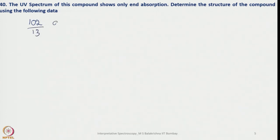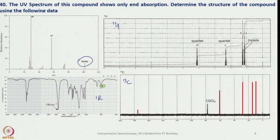So with 102, first we shall divide by 13 — it becomes 7 remainder 11, so that means C7 and H will be 7 plus 18 = 25. Now going back to the IR spectrum, we have a very strong peak at 1740 and also a peak around 1200. This indicates we have both C=O as well as C-O, meaning carbonyl is there and an ester group is also present.